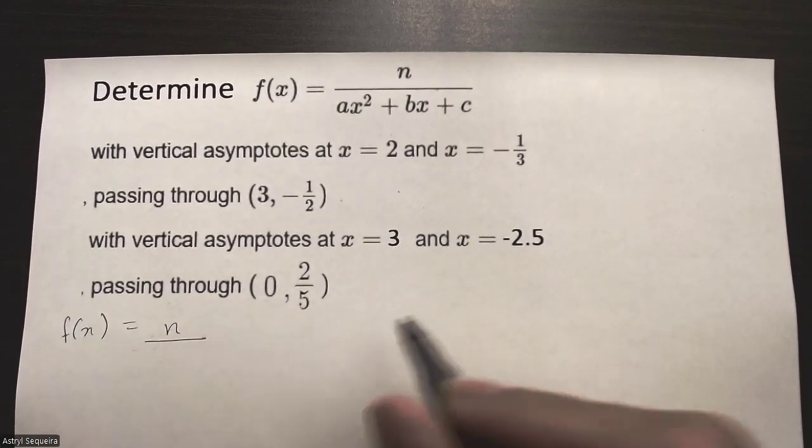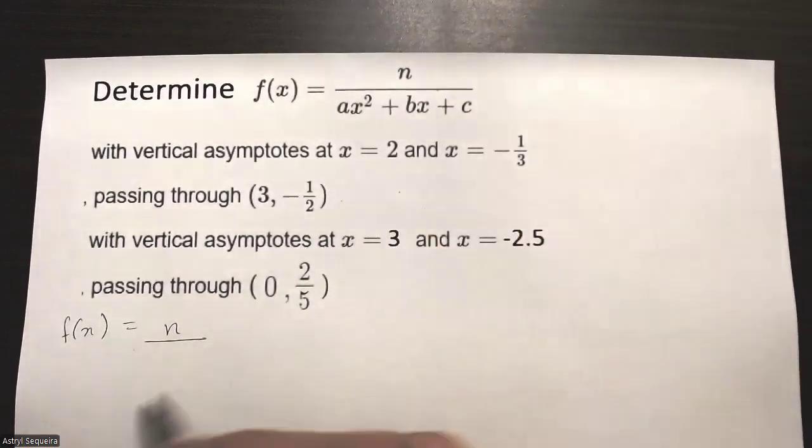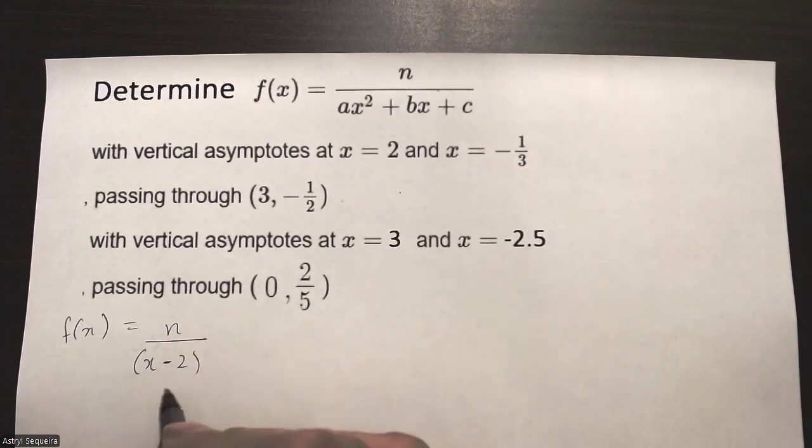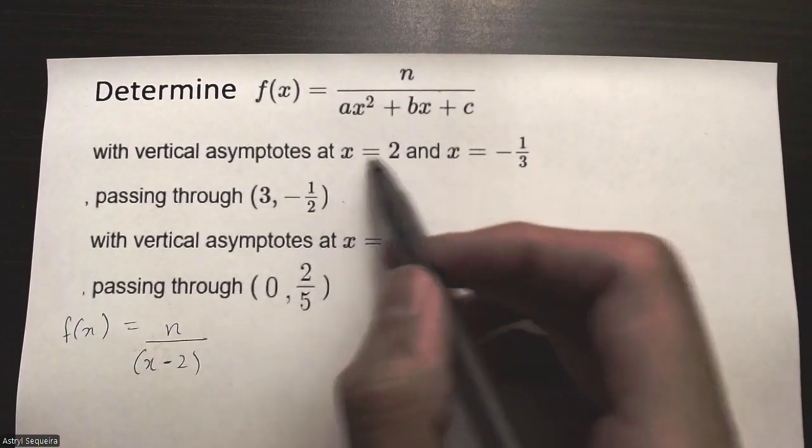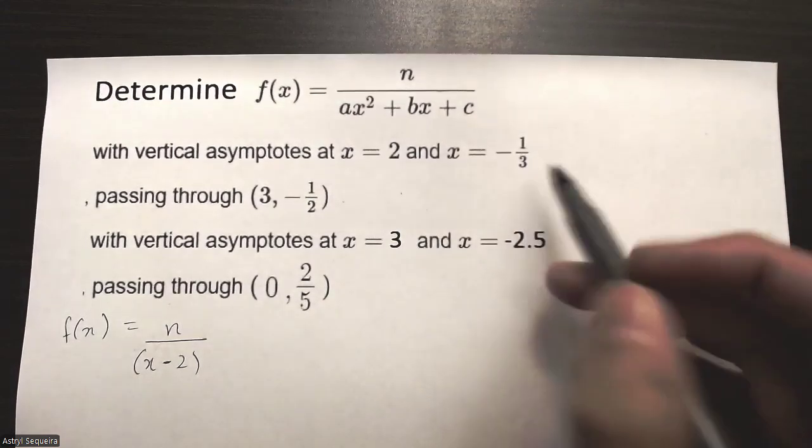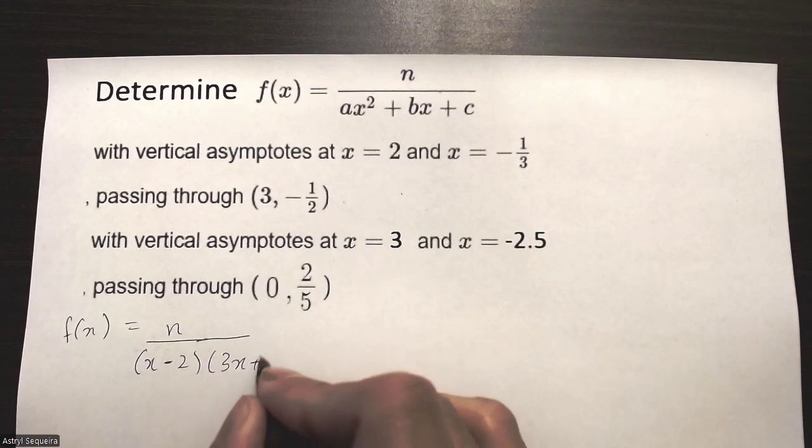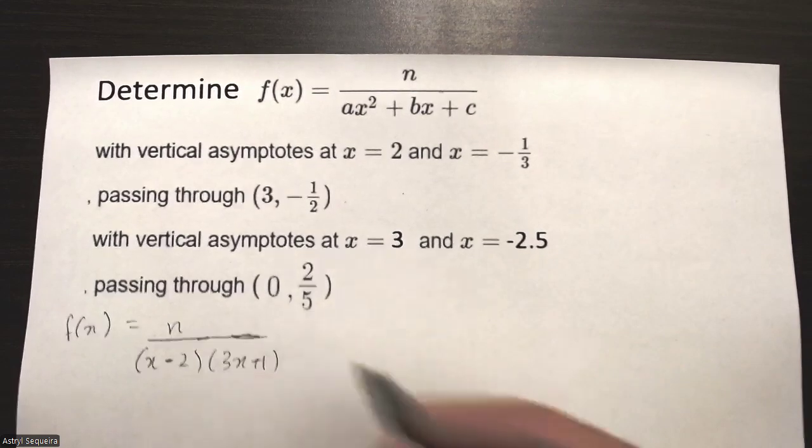n over—and if I have x equals 2, I know that my factor is (x - 2) because positive 2 is a solution to that. And if I have negative 1/3, that's just (3x + 1).